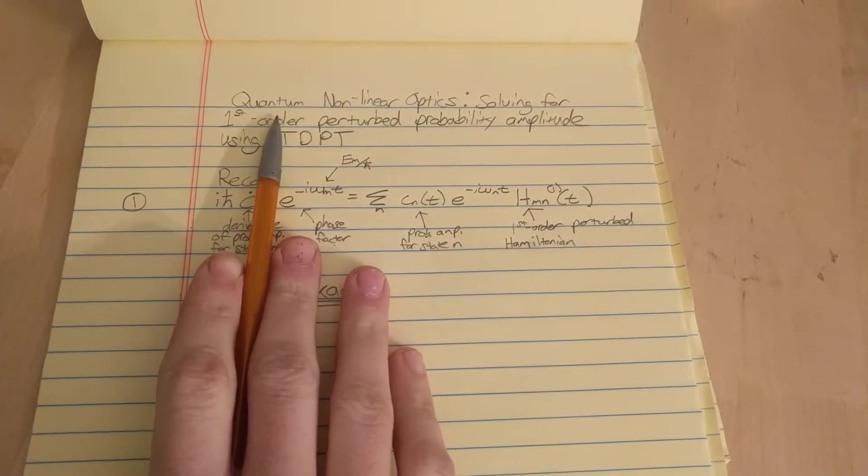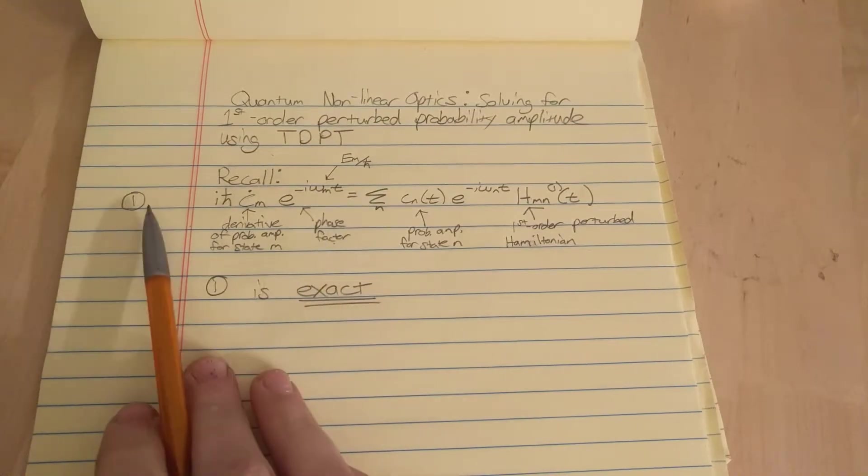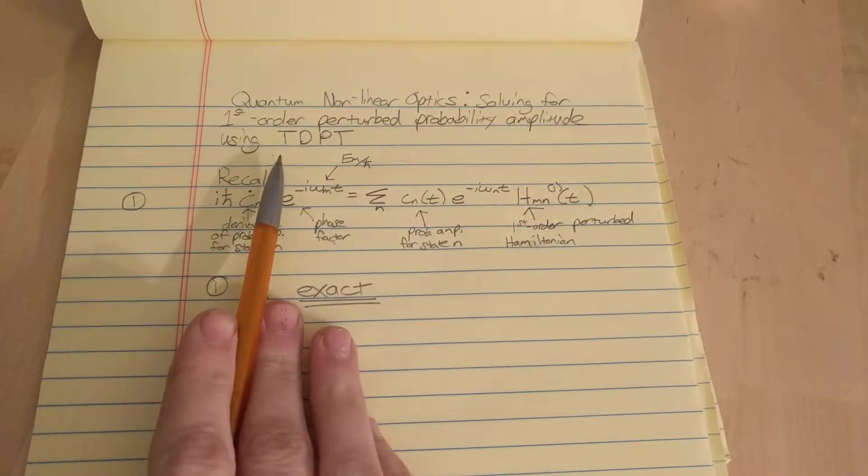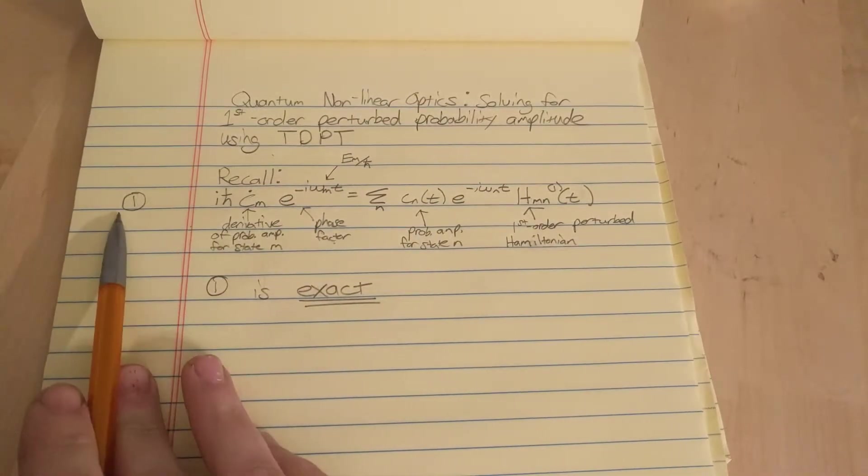Whereas in previous videos we solved for the susceptibility and polarization classically. So if you watch my video on time-dependent perturbation theory, you see we arrive at this result here which I labeled equation 1.